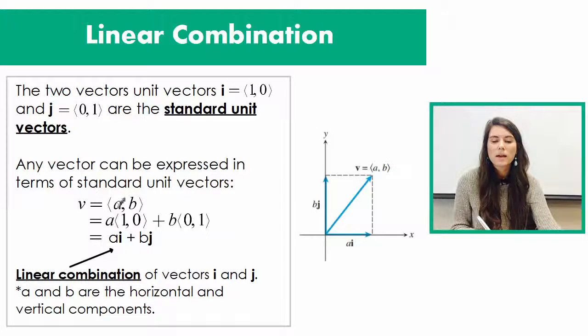given to you in the form (a, b) in brackets, all you do is attach an i to the a and a j to the b. And this is your linear combination. That's it - like nothing more. You just attach an i to the a and a j to the b, and you are done. You've written your vector as